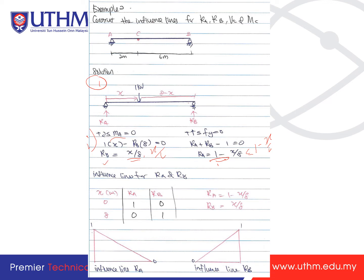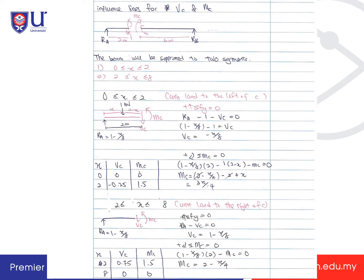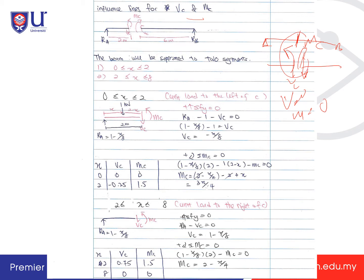After constructing the influence lines for the reactions, now construct the influence line for VC and MC. Cut the beam at C to create two sections. At the cut, VC acts upward on one side and downward on the other, with MC acting clockwise and counterclockwise. For the first segment — with the load between 0 and 2 meters — the load distance is X, and the remaining distance is 2 minus X.